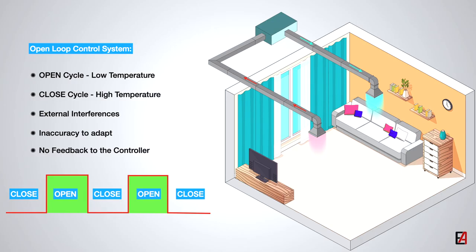Another classic example of this open loop control system is a washing machine. The washing machine operation is entirely dependent on the amount of time set by the operator. It is obvious that the clothes may or may not be cleaned thoroughly, as there is no feedback to the washing machine about the cleanliness of the clothes.